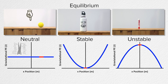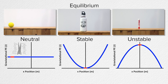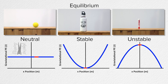This ball is in neutral equilibrium because the gravitational potential energy of the ball remains constant regardless of its position. So the graph of the gravitational potential energy of the ball with respect to position is a horizontal line, because the gravitational potential energy is constant.